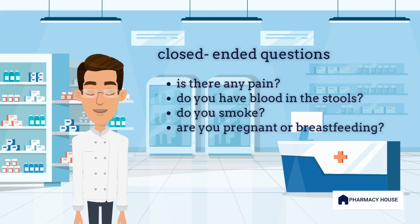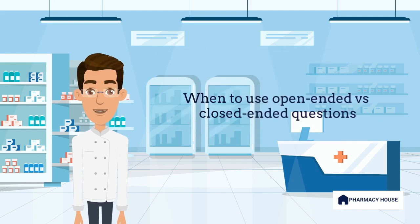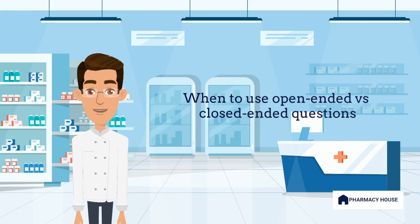For example, after asking a patient 'What are the symptoms of your rash?' you may follow up with 'Is it itchy?' When obtaining a patient history, it is important to know when to use each type of question. For example, instead of asking a patient 'Are you on any medications?' it would be more appropriate to ask 'What medications are you on?' A closed-ended question can then be used for further clarification as a follow-up, such as 'Are you taking any complementary or herbal medications?'